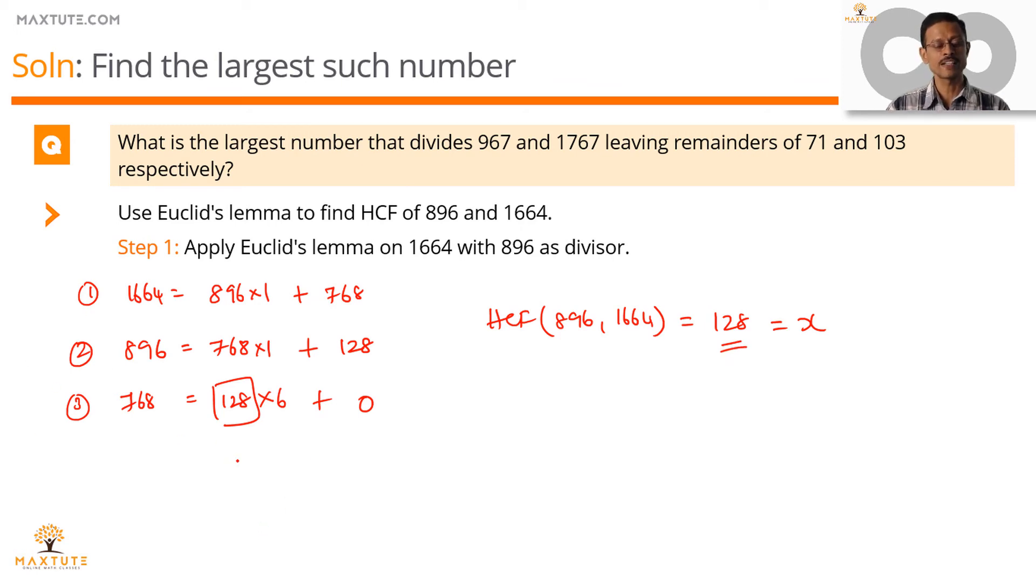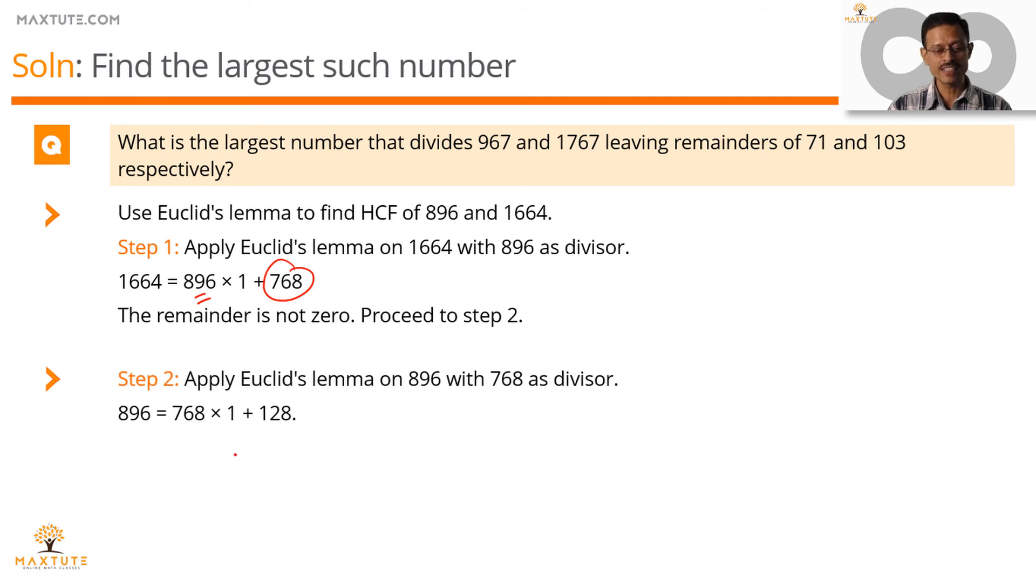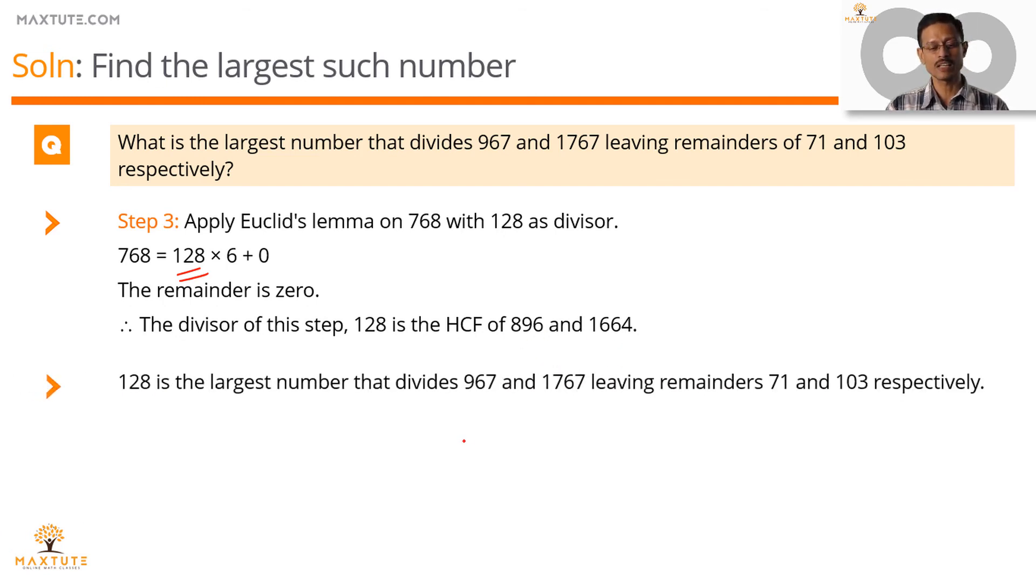Let's quickly summarize this Euclid division lemma in a printed form. Applying it on 1664 with 896 as the divisor, the remainder exists which is non-zero. Apply it recursively. This time on 896 with 768 as the divisor. We have a remainder which is non-zero. Apply it recursively. This time on 768 with 128 as the divisor. Remainder is 0. So, 128 is the HCF. The HCF of these two numbers, 896 and 1664, is the largest number we are looking for that will divide 967 and 1767 leaving remainders of 71 and 103 respectively.